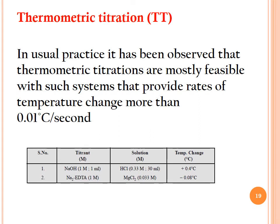As an example: thermometric titrations are mostly feasible for systems providing a rate of temperature change greater than 0.01°C per percent. For sodium hydroxide titrating HCl—a simple neutralization/acid-base titration—a temperature change of +0.4°C is easily detected by TT. A second example: 1 M sodium EDTA titrating 0.033 M magnesium chloride (a complexometric titration) produces a temperature change of −0.08°C.